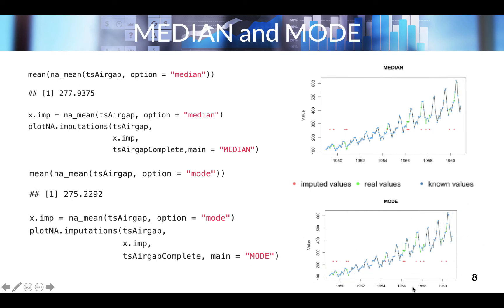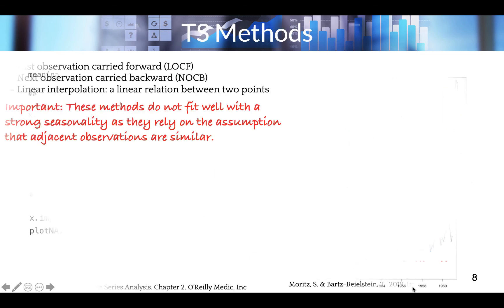We can use the same imputation function and add option 'mode' or 'median'. The imputed values marked in red are a bit closer to observed values, but they still do not fit well. Mean, median, and mode imputation would typically be used for datasets with no trend, no seasonality, or for non-time-series methods. For data with trends, other methods are needed.